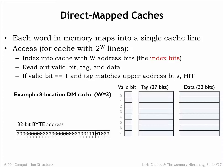Let's see how this works using a small direct mapped cache with 8 lines where each cache line contains a single word of data. Here's a CPU request for the location at byte address 0xE8. Since there are 4 bytes of data in each cache line, the bottom two address bits indicate the appropriate byte offset into the cached word. Since the cache deals only with word accesses, the byte offset bits aren't used.